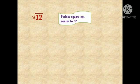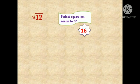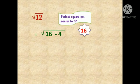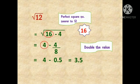Now let us solve the same problem by taking the perfect square number nearer to 12 as 16. We follow the same method — just see the difference. We rewrite the square root of 12 as the square root of 16 minus 4, because 16 minus 4 equals 12. The value will not change. In the next step, we find the square root of 16, which is 4. Then we write minus 4 divided by double of 4, which is 8. The calculation gives 4 minus 4/8 = 4 minus 0.5 = 3.5.